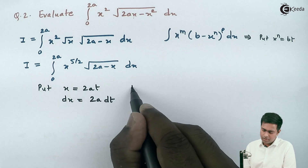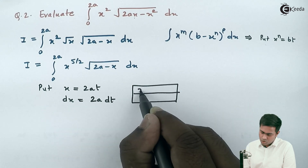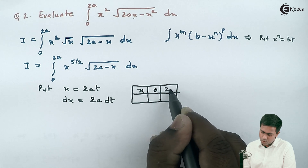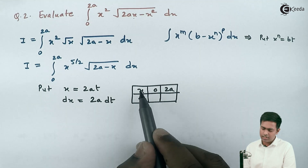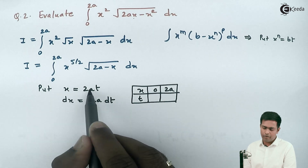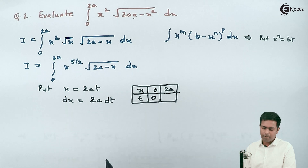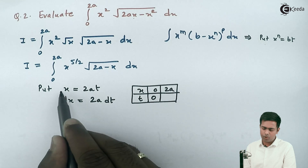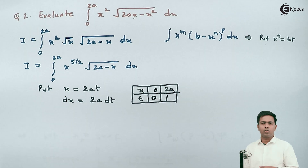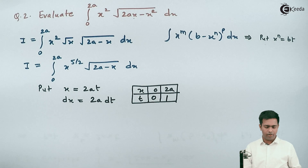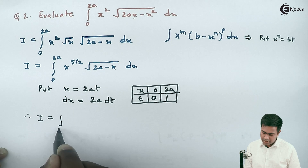Now let's see the limits. The limits for x were 0 to 2a. When x is 0, t is also 0, since 0 divided by 2a is 0. When x is 2a, then 2a equals 2at, the 2a's cancel, and t becomes 1. So we get i as integration from 0 to 1.